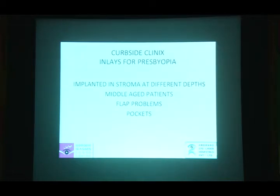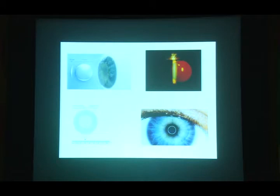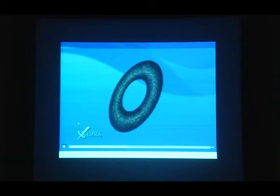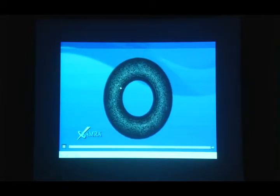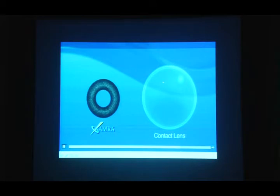Corneal inlays for presbyopia are implanted in the stroma at different depths. There are four different inlays available in the market; we only have experience with the Kamra inlay, which is what I will speak about — the others are not even available in this country. Here is a small animation showing the Kamra inlay compared to a contact lens, and the instruments required to implant it. A femtosecond laser is required to create a pocket; it is no longer done with a microkeratome.